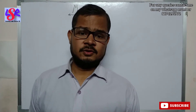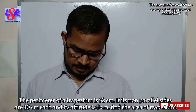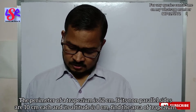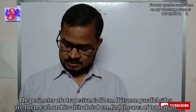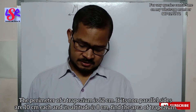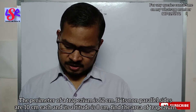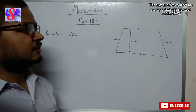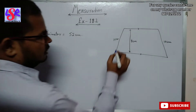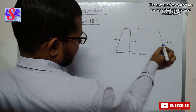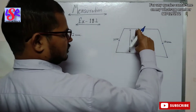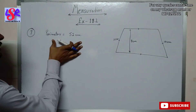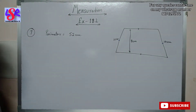In question number 7, the perimeter of a trapezium is 52 centimeters. Its non-parallel sides are 10 centimeters each and its altitude is 8 centimeters. We need to find the area of the trapezium. As per the information given, the non-parallel sides are 10 centimeters each, the distance between the parallel sides is 8 centimeters, and the perimeter is 52 centimeters.